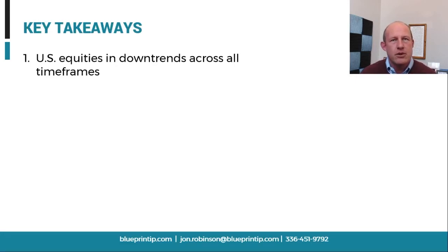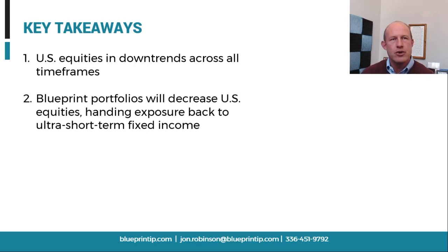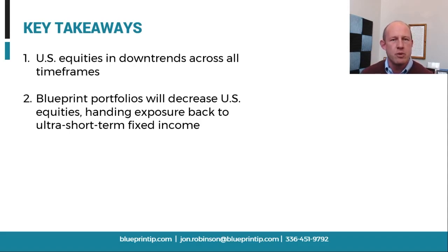What are the key takeaways? U.S. equities are in downtrends — intermediate and long term. The asset class level will experience a larger decrease than the strategies that utilize single stocks, but every strategy will experience a decrease in equity exposure, mainly from U.S. equities, as we're already at minimum allocations in emerging and foreign stocks. This decrease will hand off to ultra-short-term fixed income. In this rising rate environment over the last six to nine months, the Blueprint portfolios have steadily decreased their duration and we've been at minimum levels of duration for about nine months.